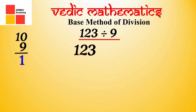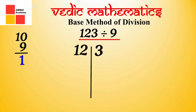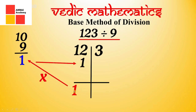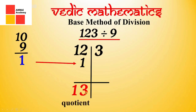We have taken 123. We have to divide 123 by a single-digit number, i.e. 9. So from the right-hand side of 123, we will give a little gap after one number, i.e. after 3, and divide this number into two parts. On one side is 12 and on the other side is 3. Now we will note the first digit of this number, which is 1, as it is. We will multiply 1 by the given complement: 1 into 1 is 1. Write 1 below 2. Now we have to do 2 plus 1, which is 3. Write 3 like this. And this 13 is your quotient.